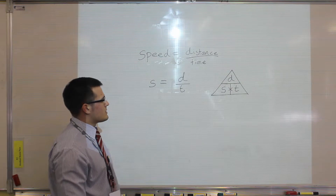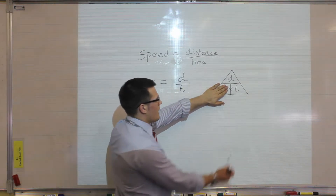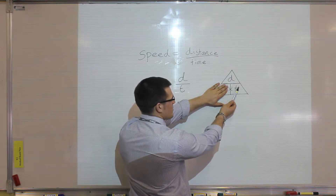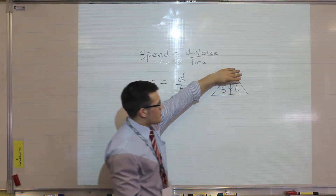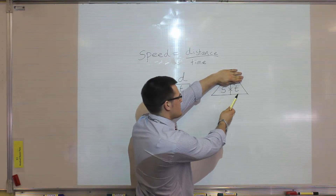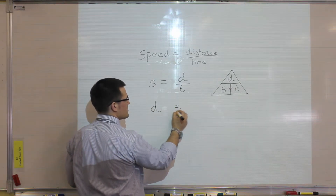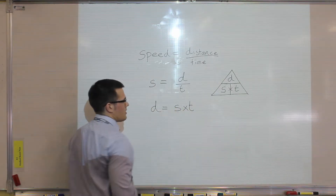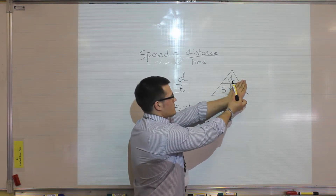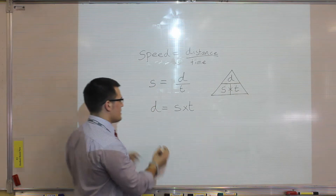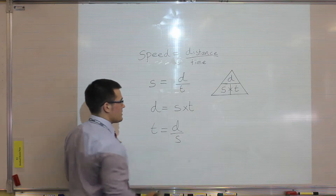To calculate speed, which is distance divided by time, you cover speed and the triangle tells you it's distance divided by time. To work out distance, cover distance and the triangle tells you it's speed multiplied by time — so distance equals speed multiplied by time. To work out time, cover it and the triangle shows distance divided by speed, so time equals distance divided by speed.